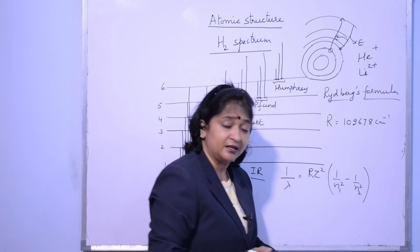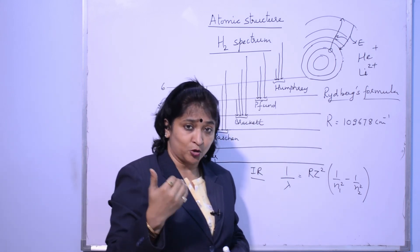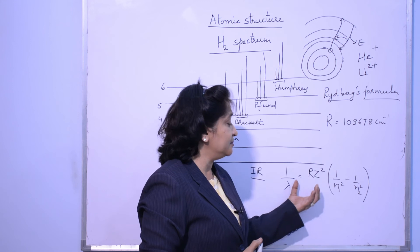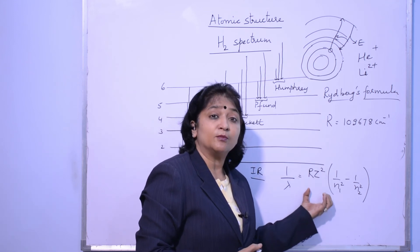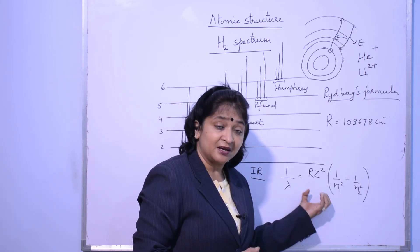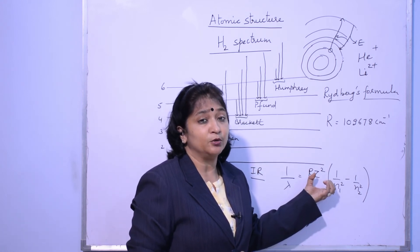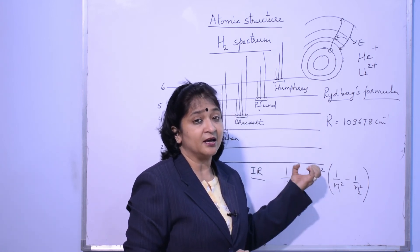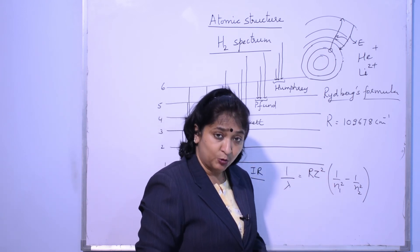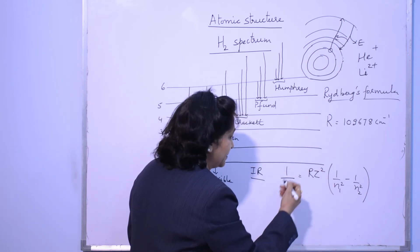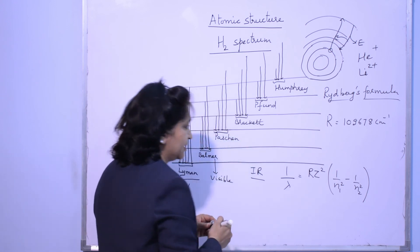This is why if it is for helium and lithium, then we need to change Z. Z means atomic number. If it is helium ion, then Z will be 2. If it is lithium ion, then Z will be 3. So you will calculate here. Like a simple example, you will need to understand N1 and N2.